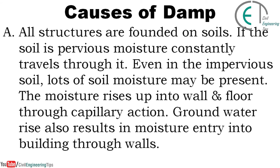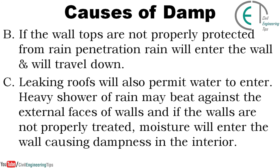Now let's discuss causes of damp. Wall structures are founded on soils — if the soil is pervious, moisture constantly travels through it, and even in impervious soil, lots of soil moisture may be present. The moisture rises up into walls and floors through capillary action. Groundwater rise also results in moisture entry into buildings through walls. If wall tops are not properly protected from rain penetration, rain will enter the wall and travel down. Leaking roofs also permit water to enter.